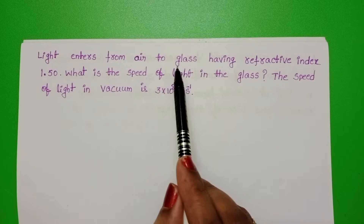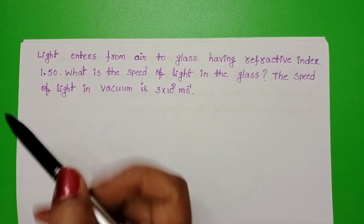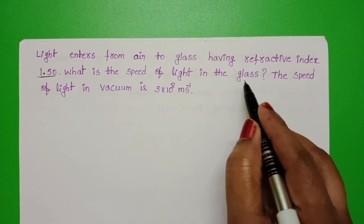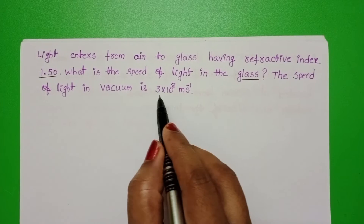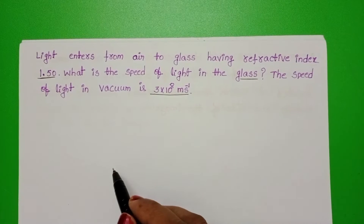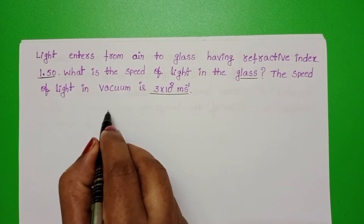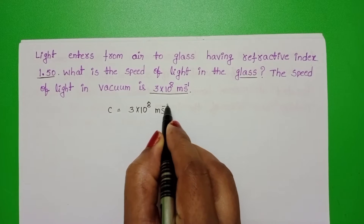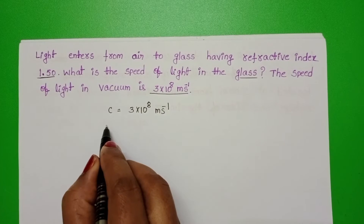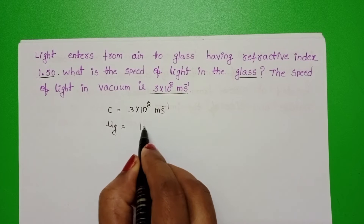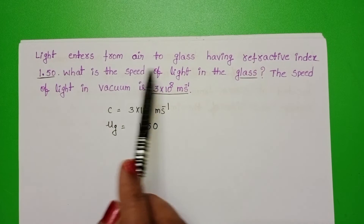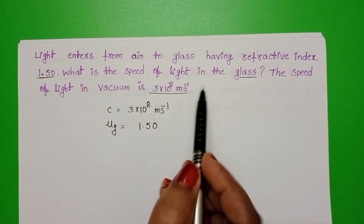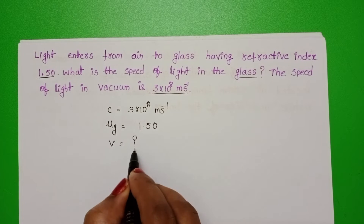Light enters from air to glass having refractive index 1.50. What is the speed of the light in the glass? The speed of the light in vacuum is 3 into 10 power 8 meter per second. The refractive index of the glass is 1.50. This light ray enters from air to glass medium. We have to find out the speed of light in glass.